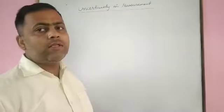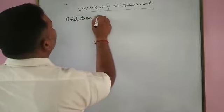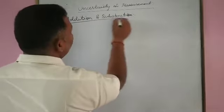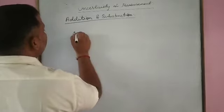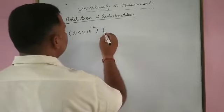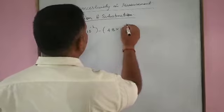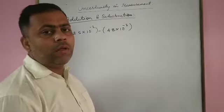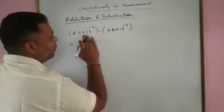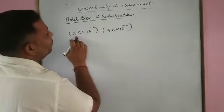Next, we will discuss addition and subtraction. If we have two numbers, that is 2.5 into 10 to the power minus 2, and minus 4.8 into 10 to the power minus 3. In order to subtract 4.8 into 10 to the power minus 3 from 2.5 into 10 to the power minus 2, what do we do first?